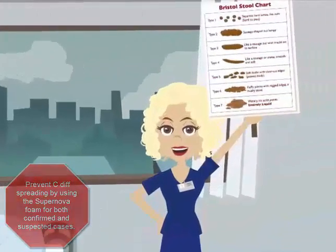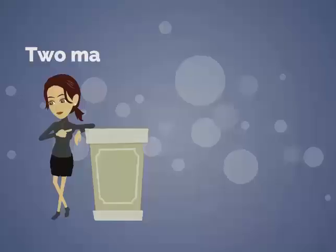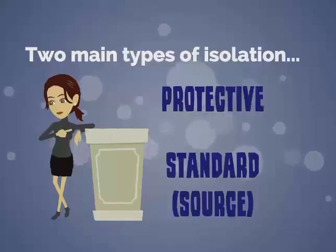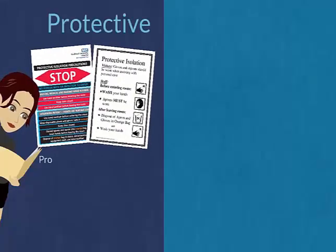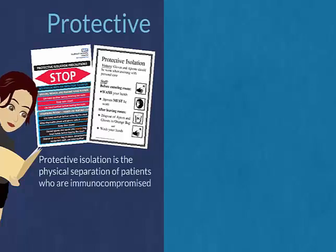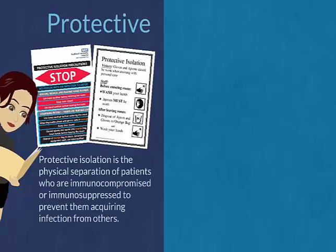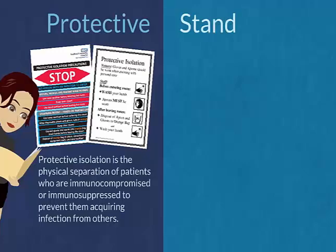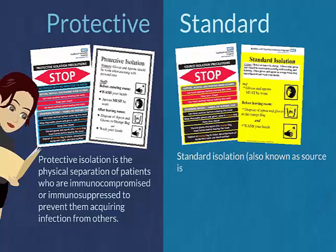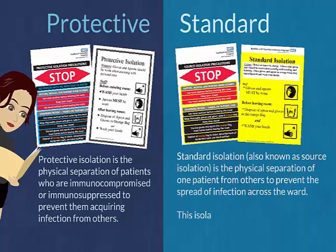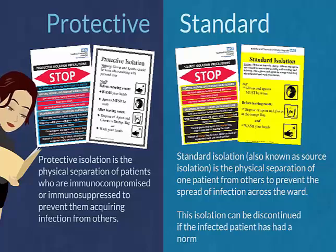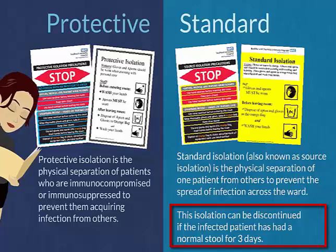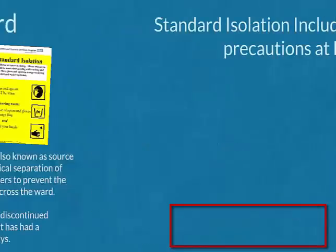There are two main types of isolation: protective and standard. Protective isolation is the physical separation of patients who are immunocompromised or immunosuppressed, to prevent them from becoming infected from others. Standard isolation, also known as source isolation, is the physical separation of one patient from other patients to prevent the spread of infection across the ward. This isolation can be discontinued if the infected patient has had a normal stool for three days.